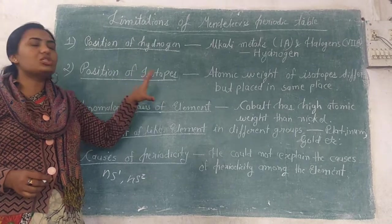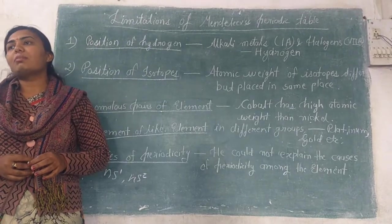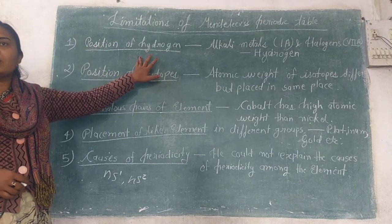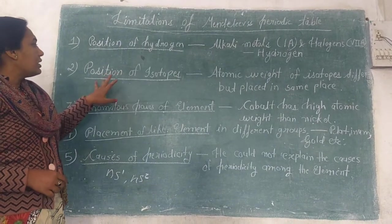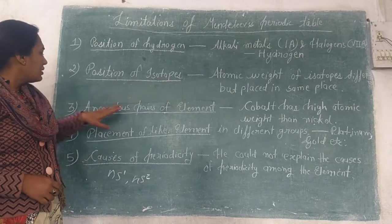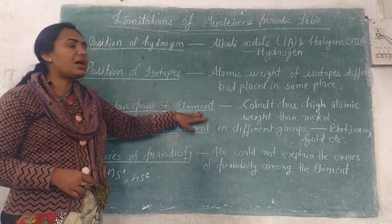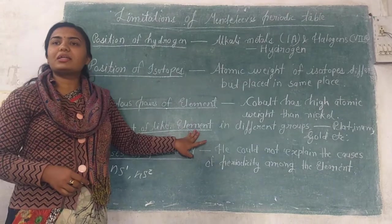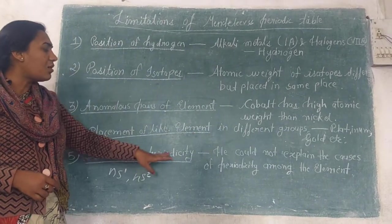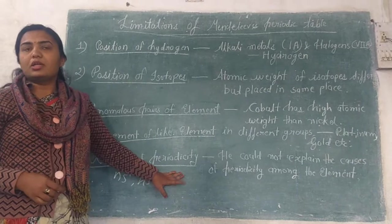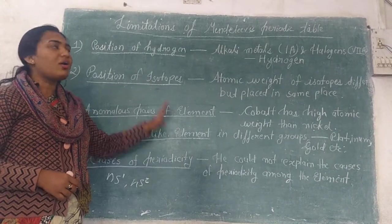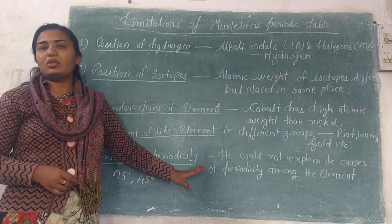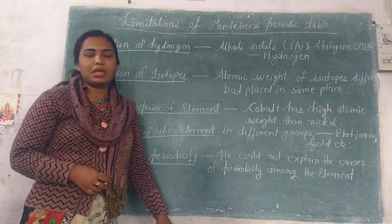To summarize, the five limitations of Mendeleev's periodic table are: the position of hydrogen, the position of isotopes, the anomalous pairs of elements, the placement of like elements in different groups, and the cause of periodicity. This is the last topic of Mendeleev's periodic table. In the next video, I will explain the modern periodic table. Thank you.